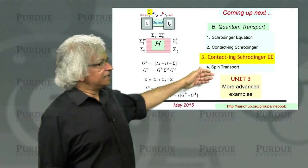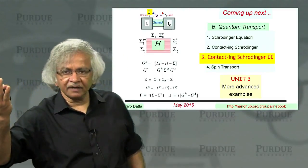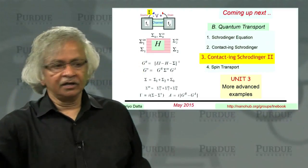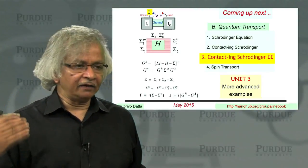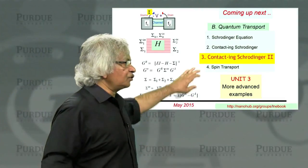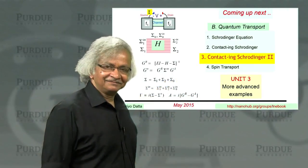In the next unit what we'll look at is more advanced examples. We'll look at two-dimensional devices, graphene, devices with magnetic fields. And in the last unit of this course we'll look at devices involving spin transport. Thank you.